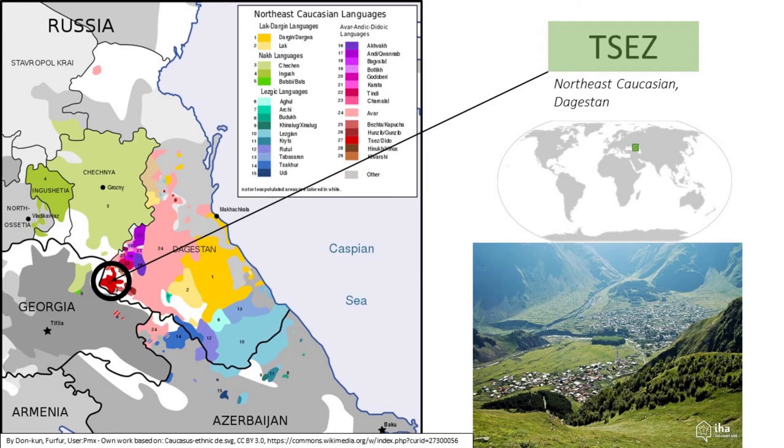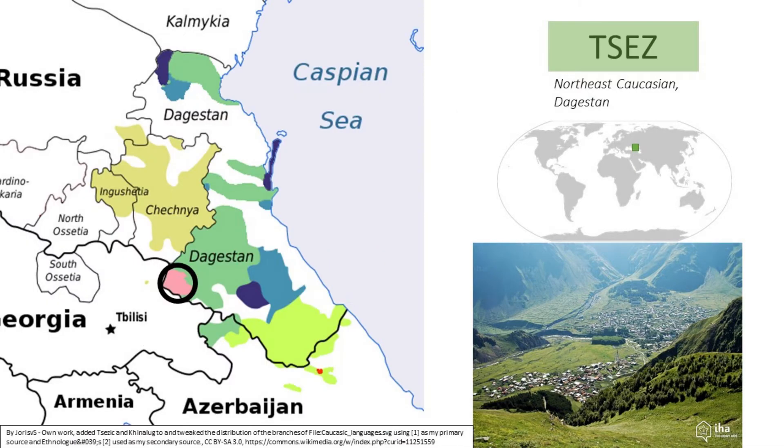Tsez is a North East Caucasian language spoken by about 12 and a half thousand people, mainly in Dagestan. Tsez is part of the Tsezic branch of the North East Caucasian language family, so I looked into other Tsezic languages to get the bigger picture about Tsez cases when the grammar I was using fell short. This did help, but not too much - it's times like this that I wish I could read Russian. For the most part, Tsez is your typical North East Caucasian language, if you can imagine such a thing.